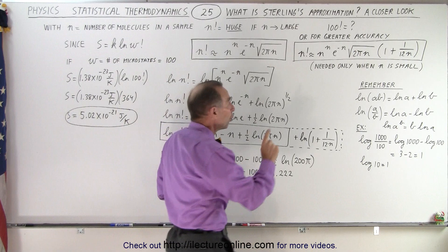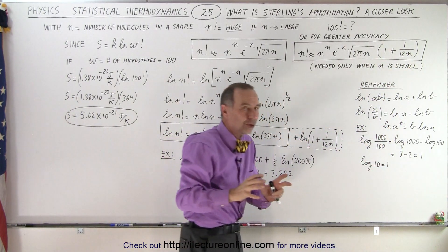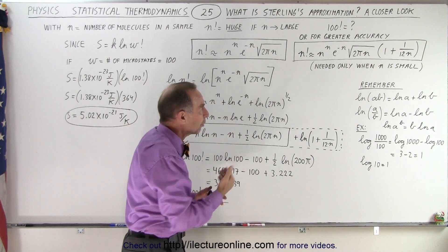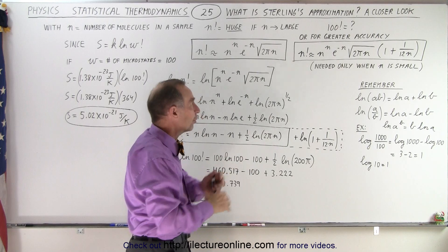Or, if you want to be really accurate when n is small, notice you only need this when it's small, you can add an additional correction factor of 1 plus 1 over 12n. Typically, when n gets to be big enough, you really don't need that anymore.